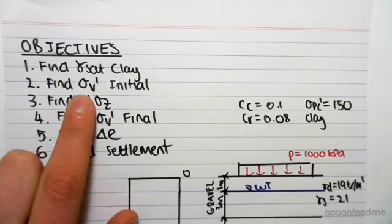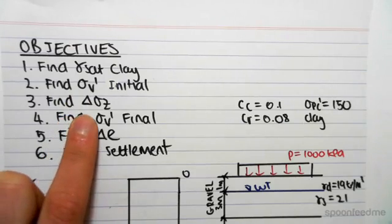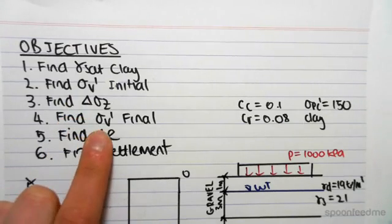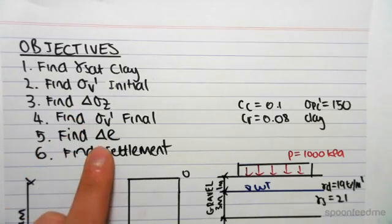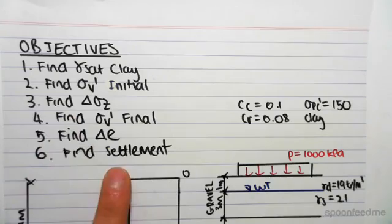The initial effective stress, the change in effective stress due to a foundation, the final effective stress. We're then going to use this information to find the change in the void ratio, and then we can find the settlement.